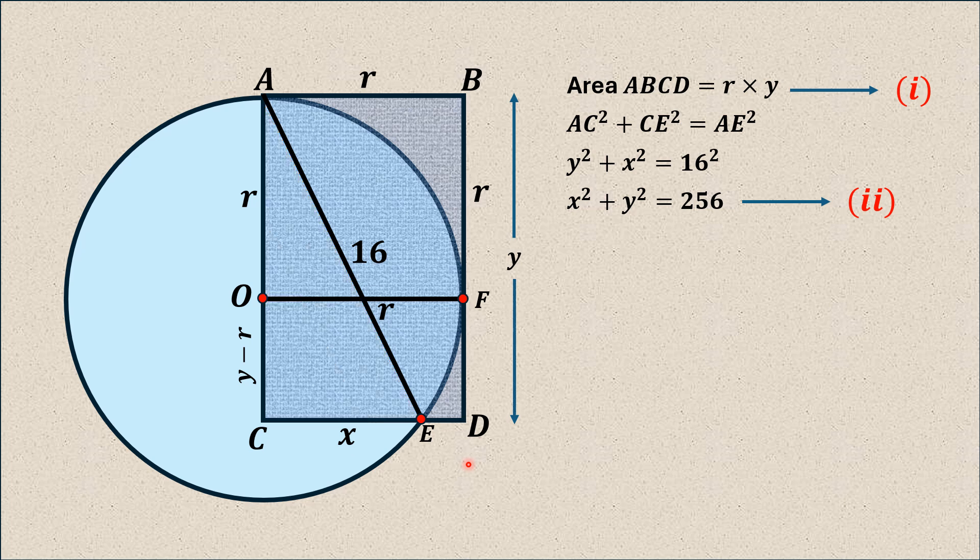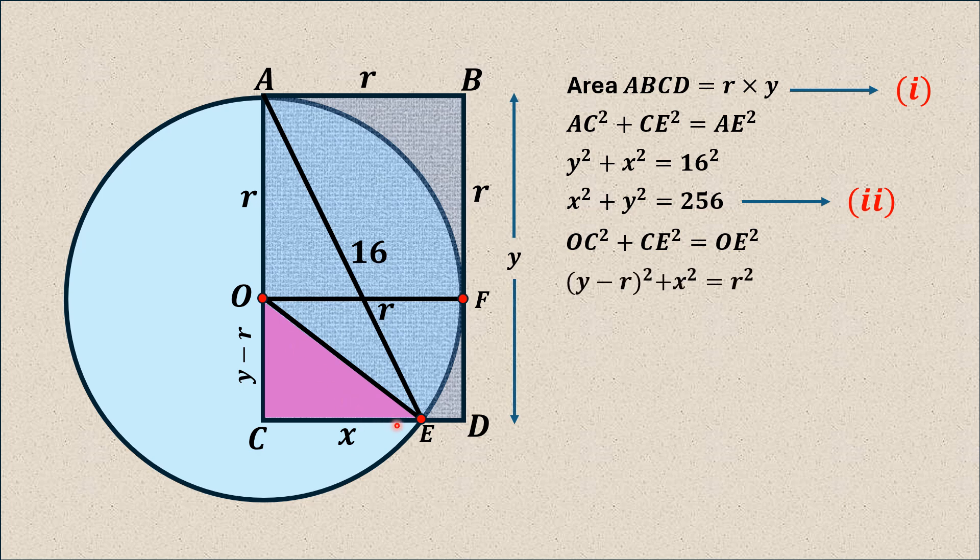Now we draw a line segment from point O to E and complete a right triangle OCE. Here OC and CE are legs of the right triangle while OE is the hypotenuse. Using Pythagorean theorem on this right triangle, we have OC² + CE² = OE². Substituting the values: OC is y minus r, CE is x, and OE is the radius of circle.